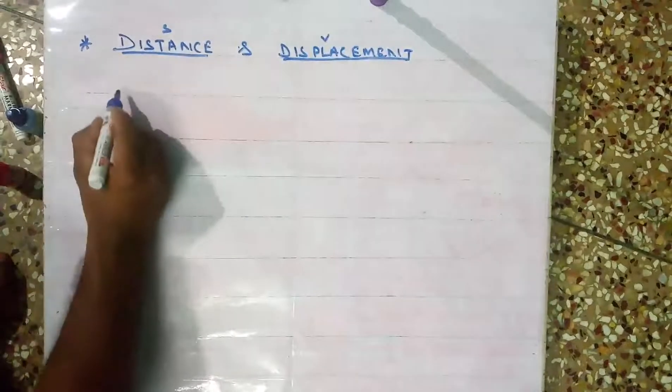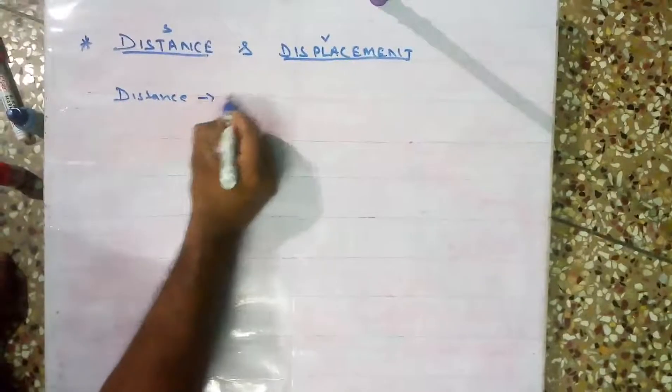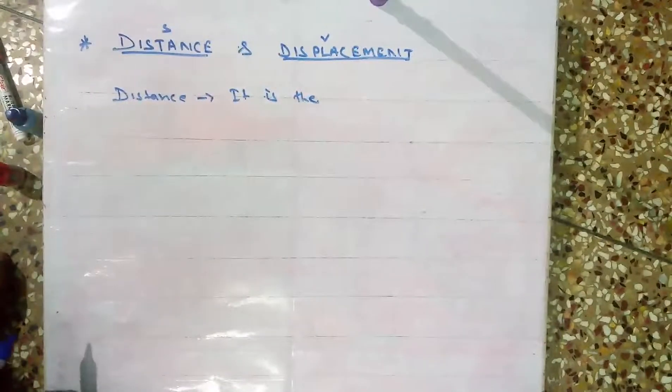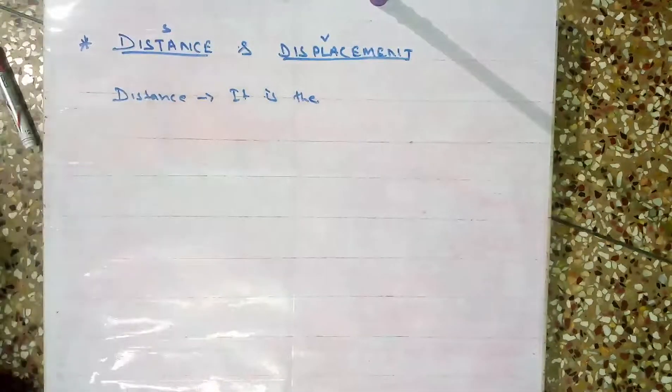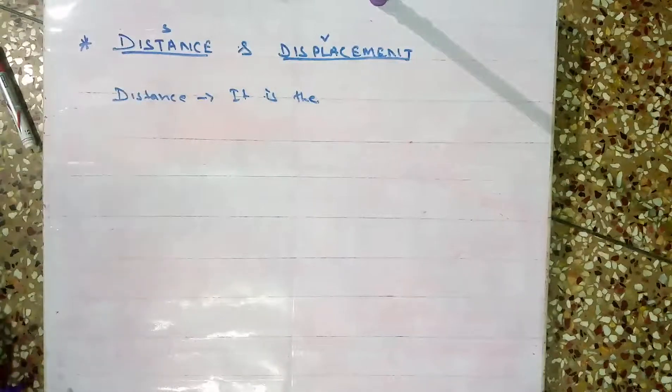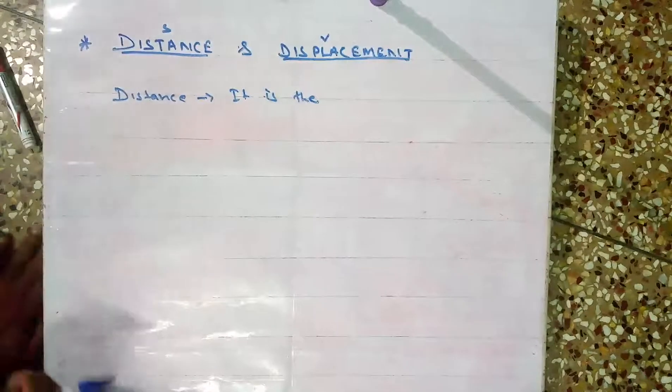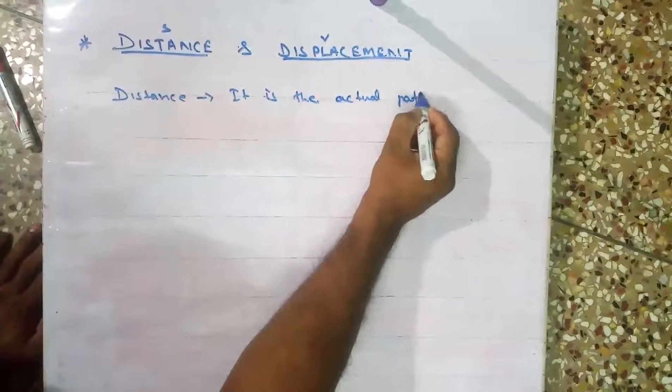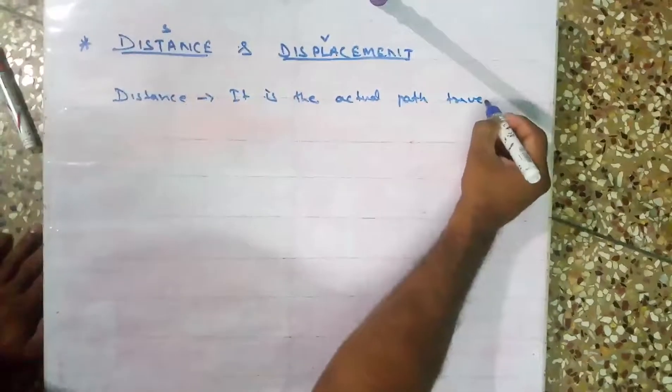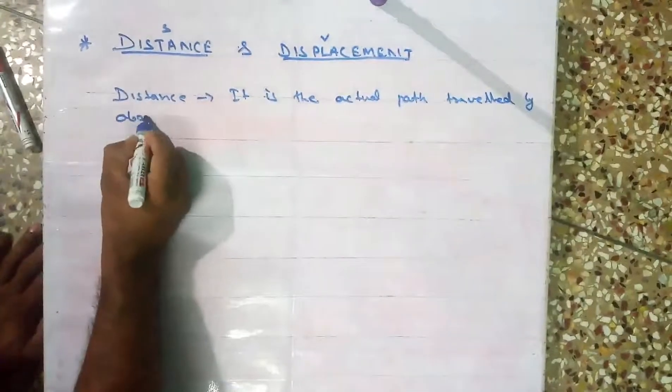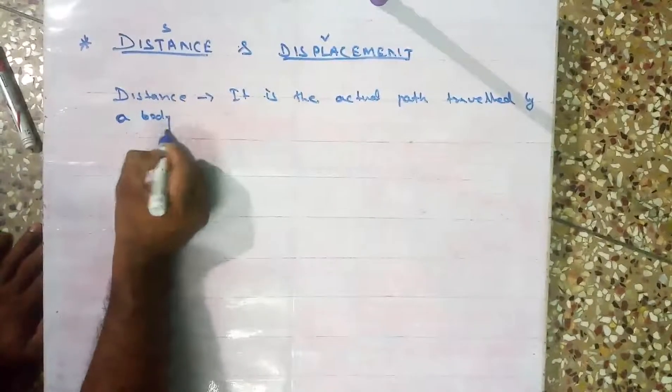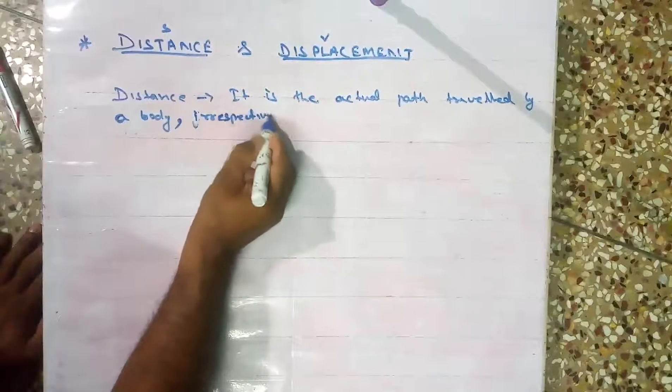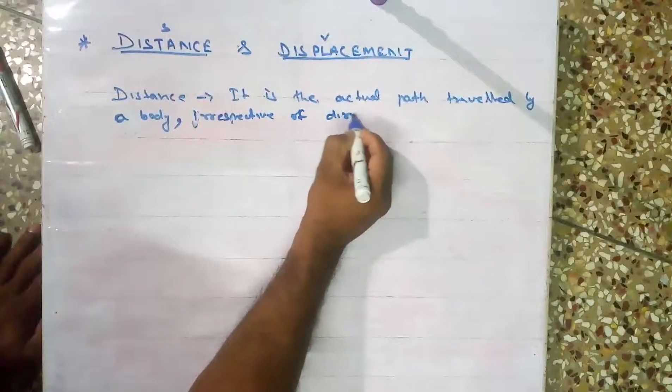What is meant by distance? Anybody want to say the definition? Don't say book definition. Ok correct. Distance is the actual path traveled by a body, irrespective of direction.